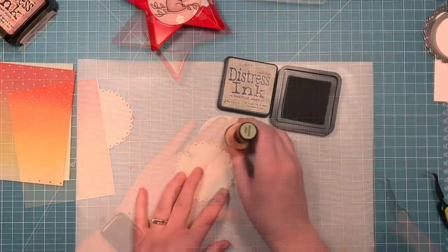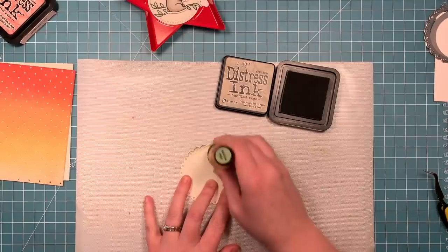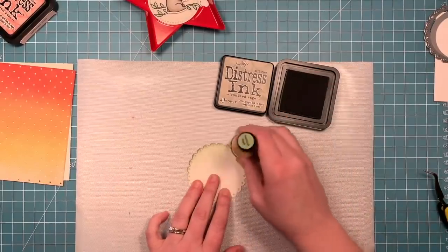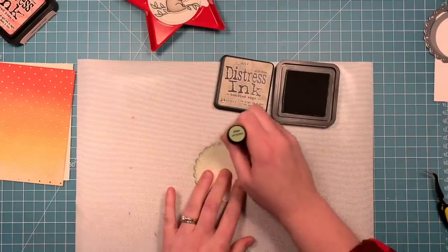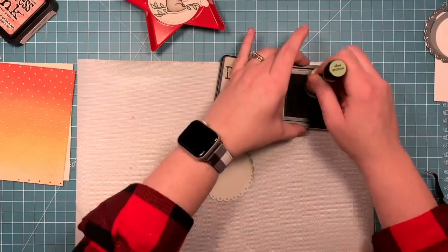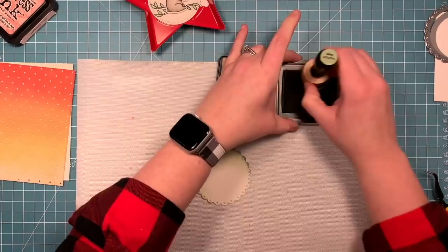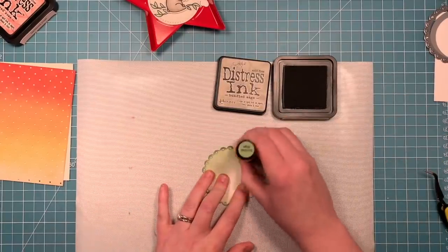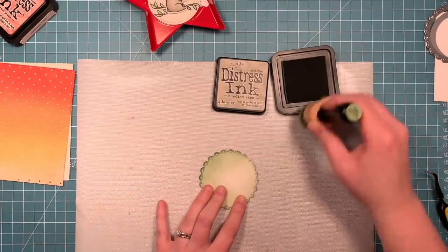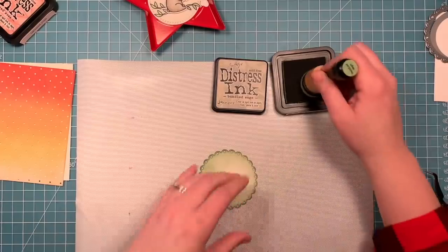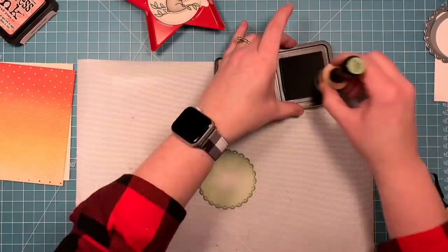Now that he's stuck down I can work on the scallop circle that goes behind. I wanted to pull in the green that I used in the eucalyptus but I didn't actually have a cardstock that was that shade of green. The cardstocks I have are more of a yellowy green. So I pulled out my bundled sage distress ink and I'm just adding that to that cream colored cardstock and making my own custom color to go behind the cream colored circle that the koala's on. Now it will match the eucalyptus.